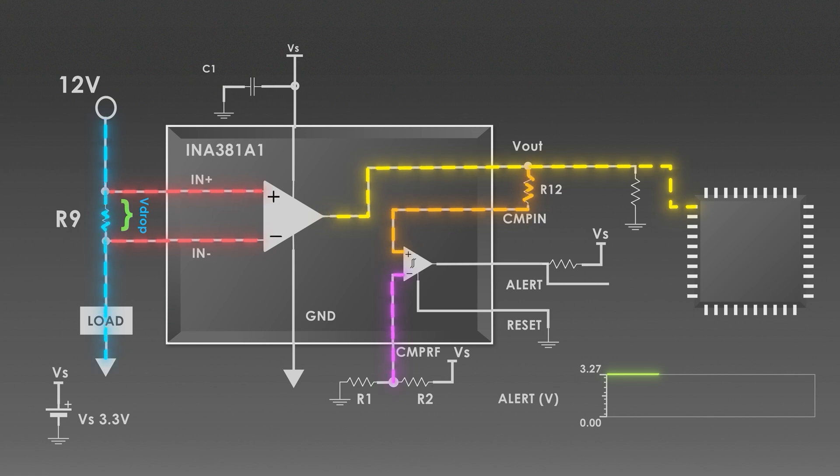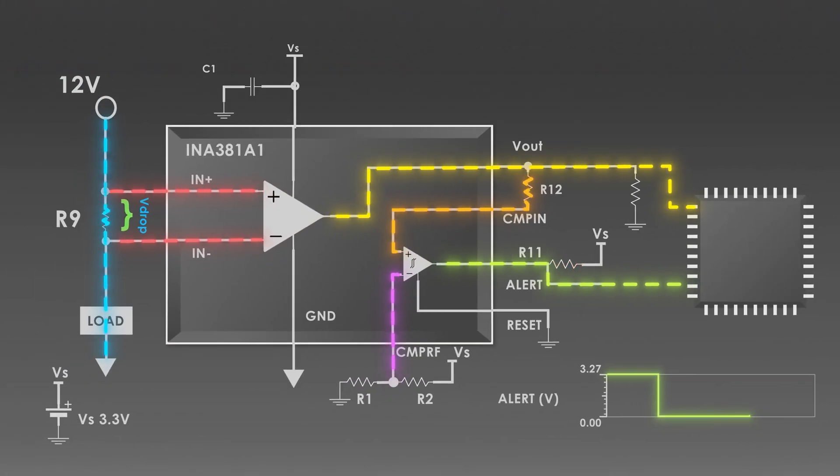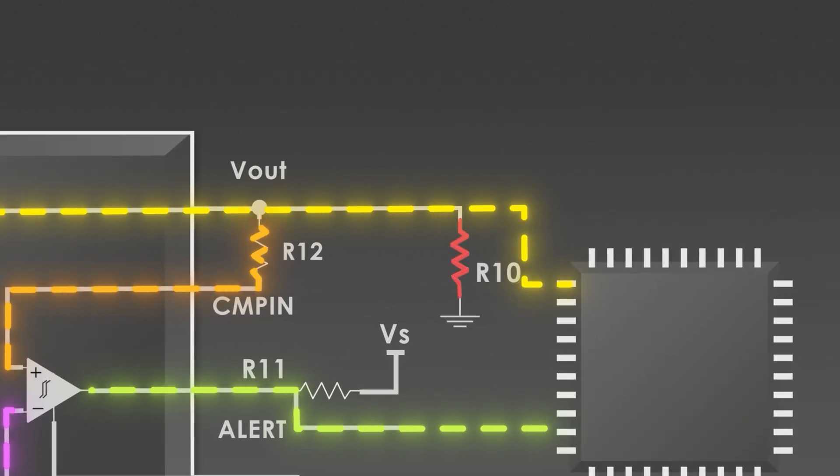Usually, this alert pin is high signal. When overcurrent is detected, the alert pin goes low, indicating a fault. That's why this R11 is a pull-up resistor, which ensures when there is no fault, then this pin is high, not giving any false results. And R10 at the output prevents leakage currents from affecting the alert signal.